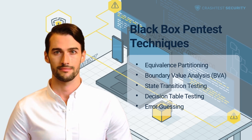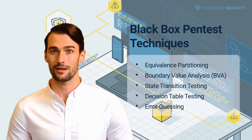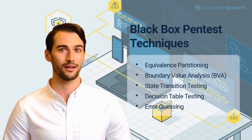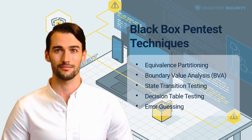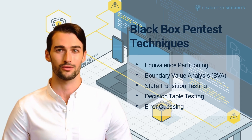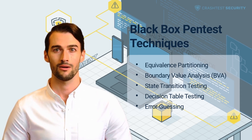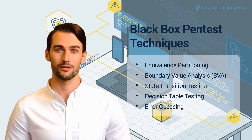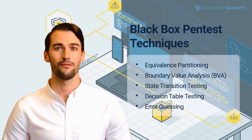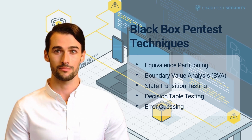Error Guessing is a technique where black-box penetration testers rely on their expertise to infer sources of issues within the application. This level of software testing is unstructured since it does not follow any specific rules or conventions. A testing team develops test cases using experience with similar performance requirements and software vulnerabilities.